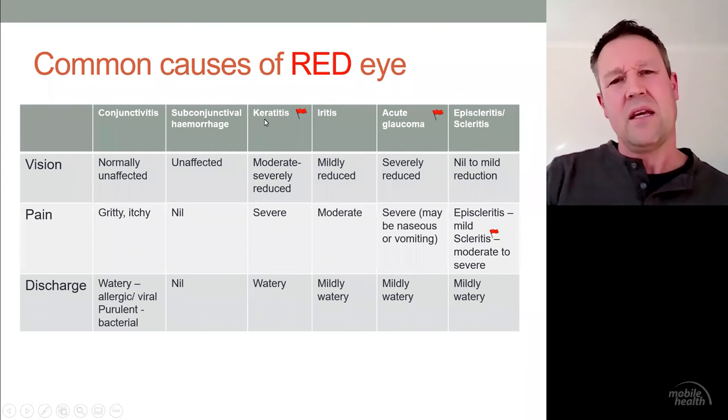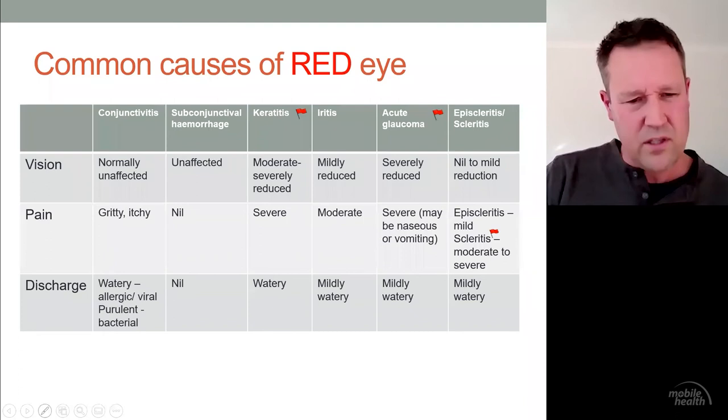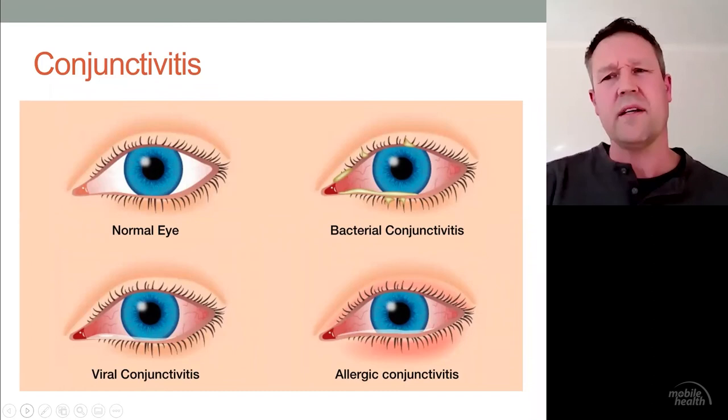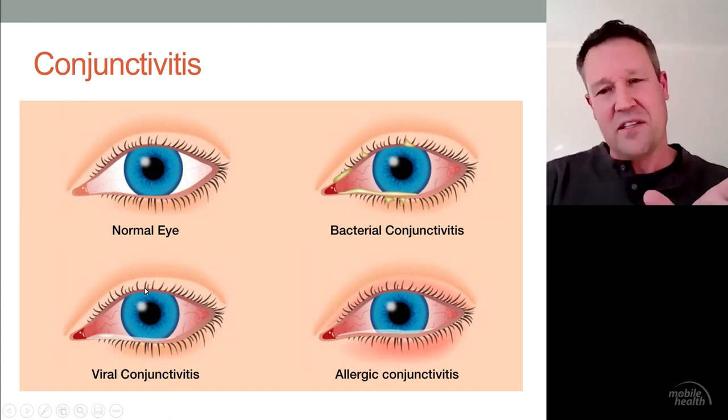With conjunctivitis, vision is normally not affected and pain is minimal — usually just grittiness. You can have watery, allergic, viral, or purulent discharge depending on the type. Looking at a normal eye compared to bacterial conjunctivitis, you can clearly see the red eye and different types of discharge characteristic of the different causes.